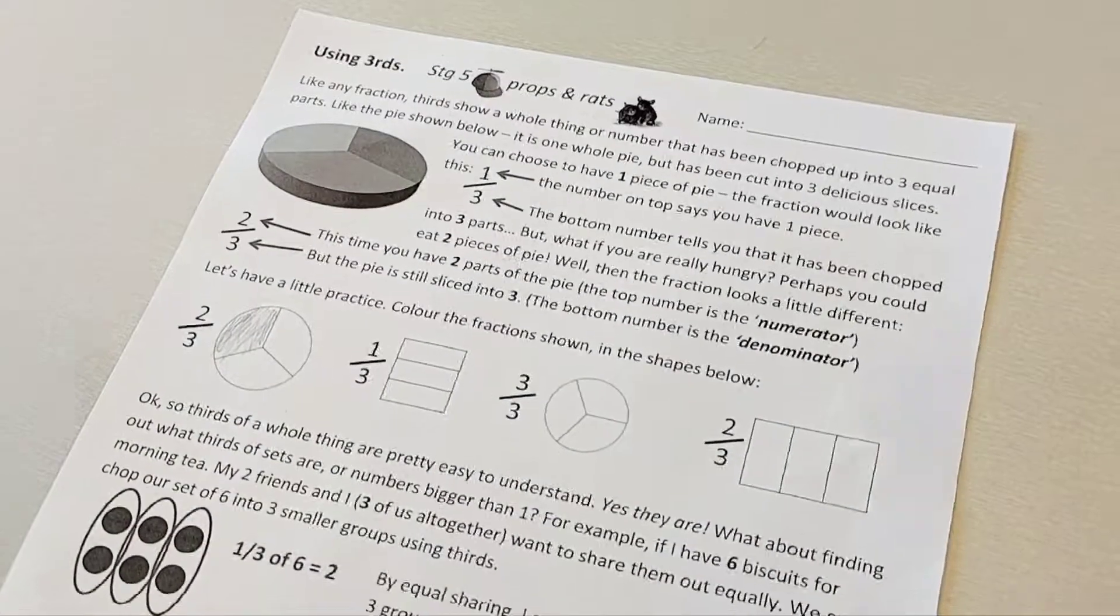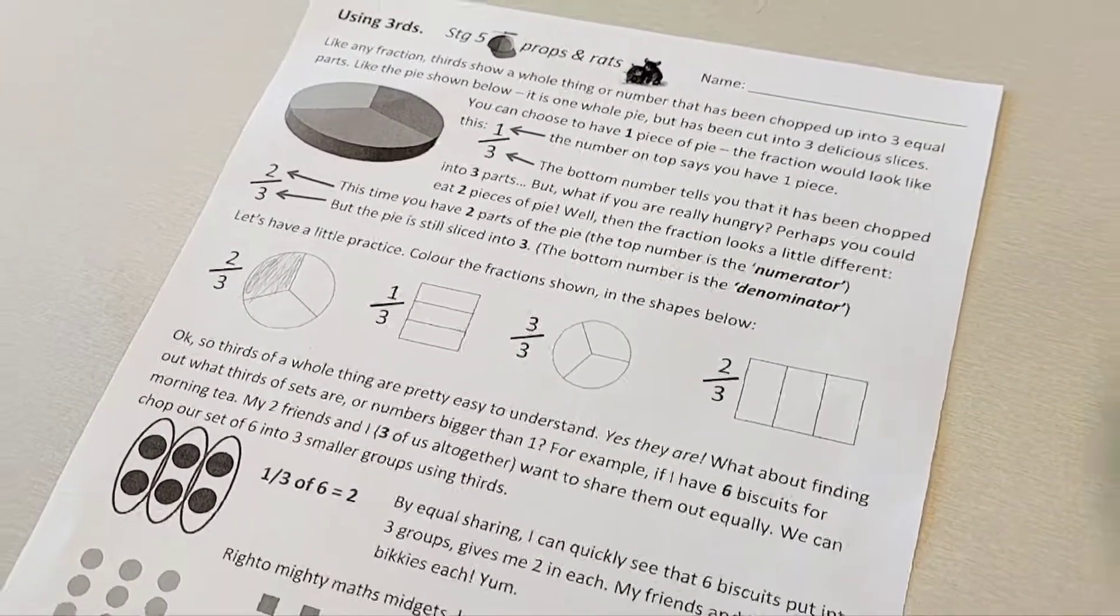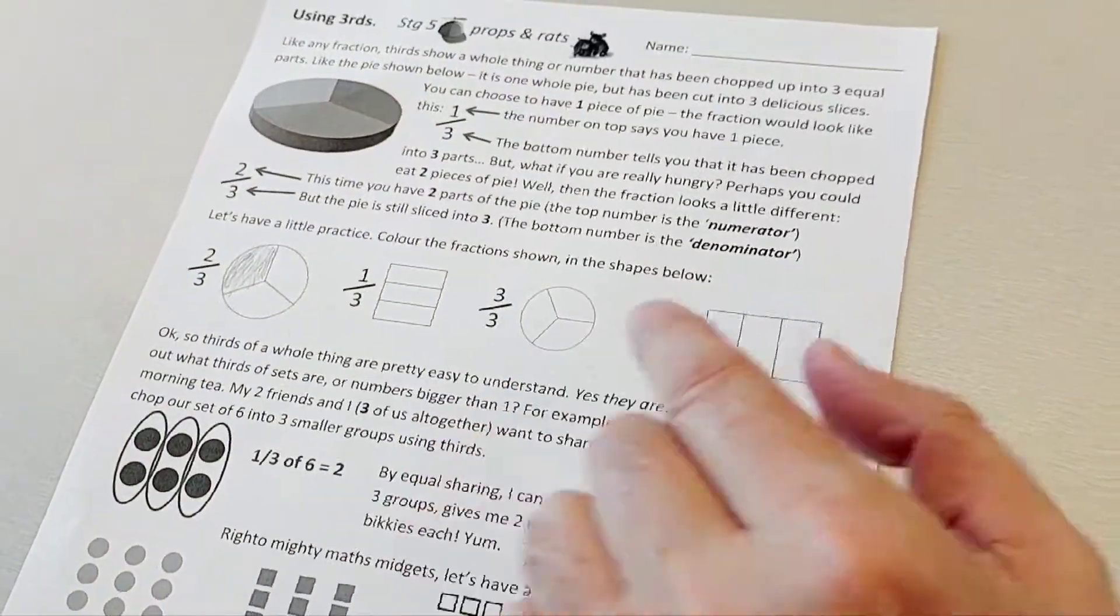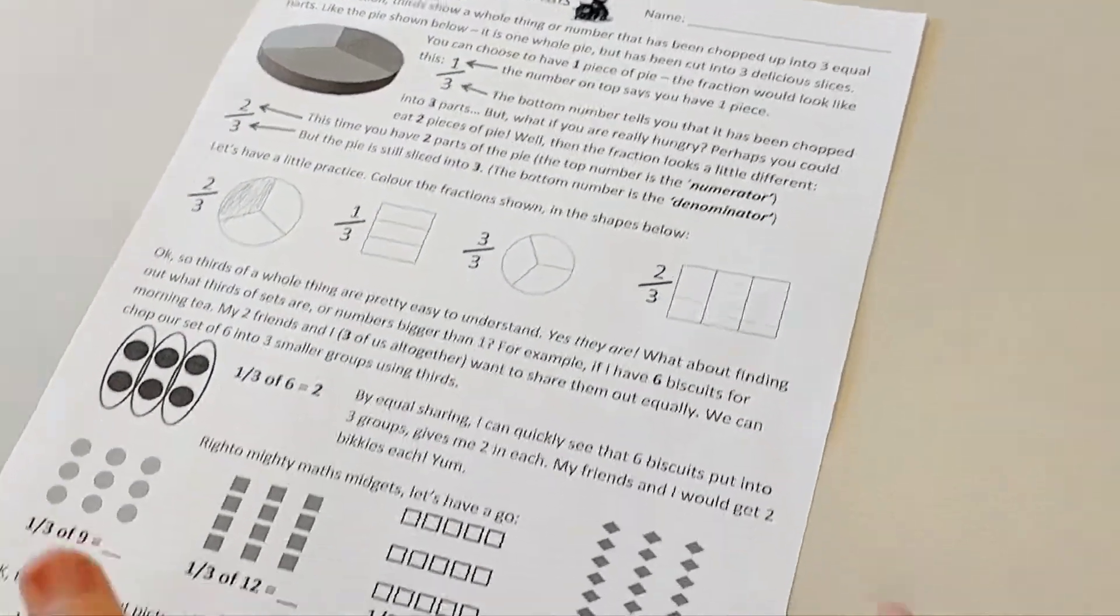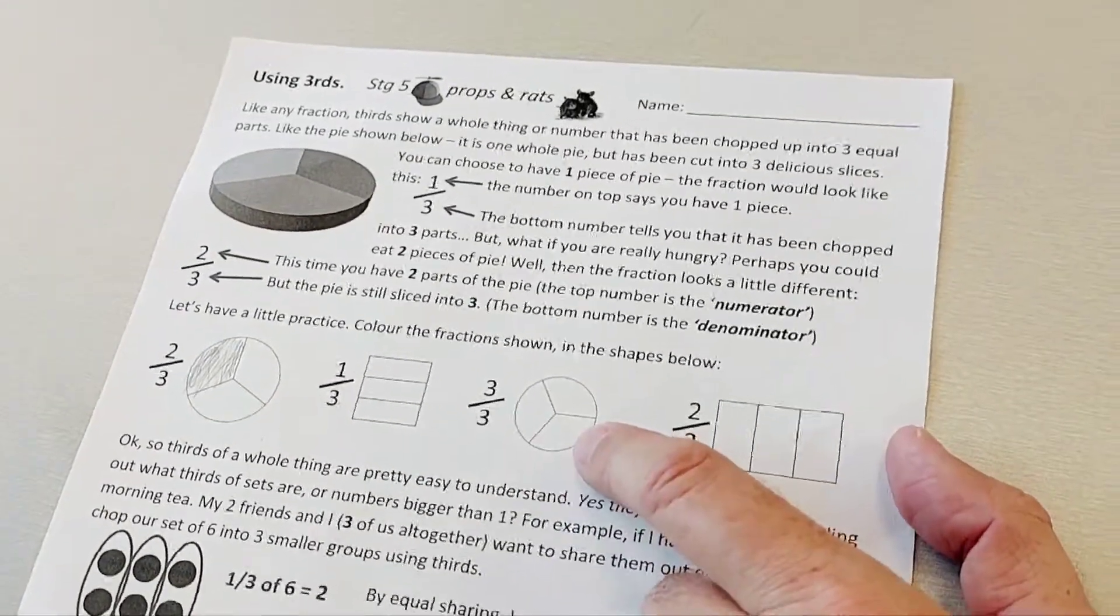Like any fraction, thirds show a whole thing or number that has been chopped up into three equal parts. Now equal is an important word here because if it's just any other thing chopped into three they might be uneven, but when we're talking about thirds they're always exactly chopped into three.